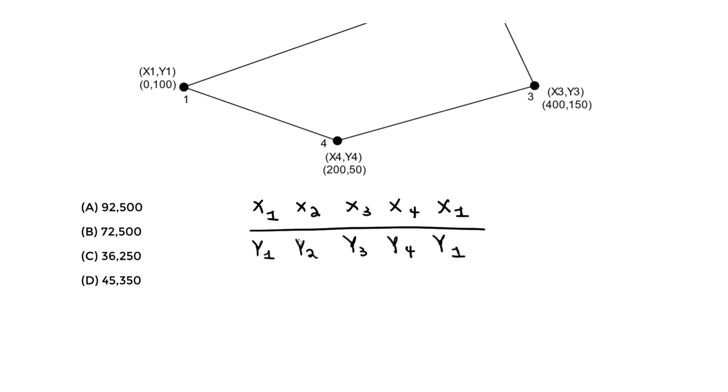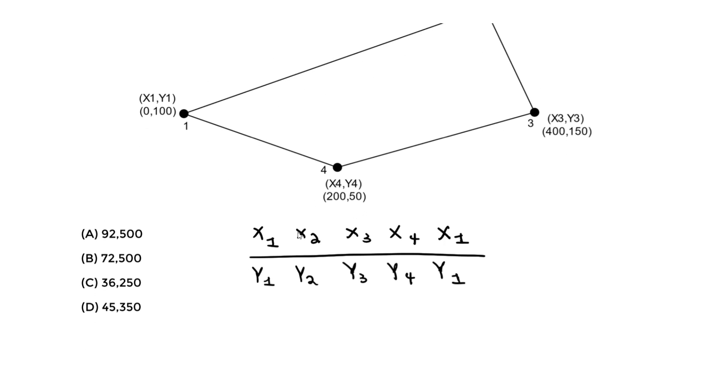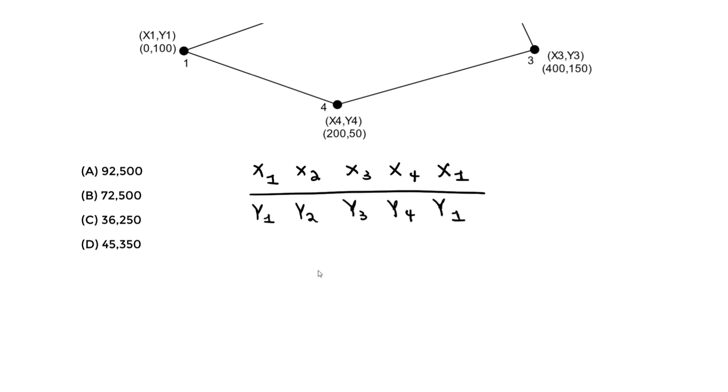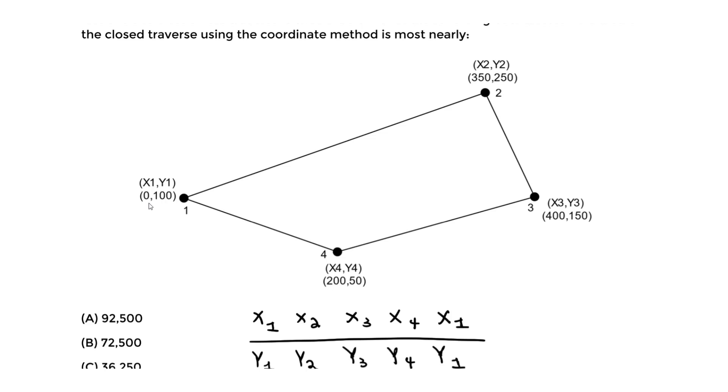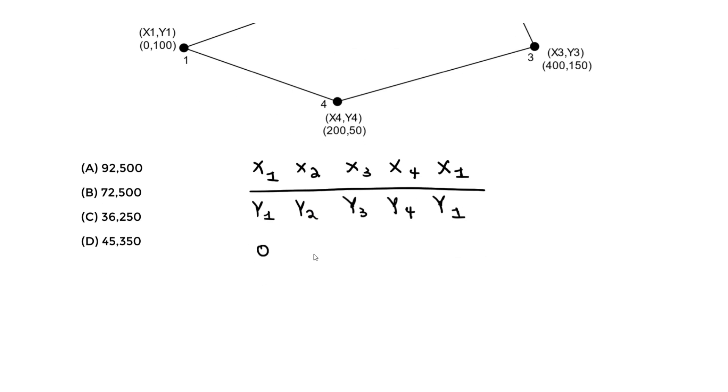Now let's fill out the appropriate values. We're doing this to visually solve using the coordinate method. So we have the top row, bottom row. x1 is 0, x2 is 350, x3 is 400, x4 is 200, and x1 again is 0. Then the bottom one is going to be y1, so it's 100. y2 is 250, y3 is 150, y4 is 50, then we end back at y1, again it's 100. So we have the top row and the bottom row. This should always be the first step you do when looking at these coordinate method questions for surveying.